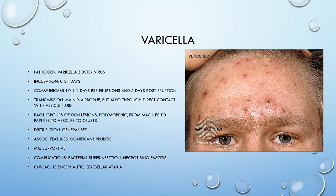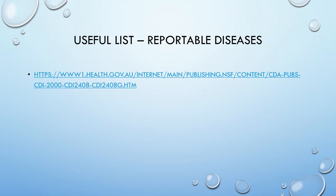Finally, varicella, caused by the varicella-zoster virus, with an incubation period of up to three weeks. It's communicable 1 to 2 days before the rash and 5 days after. Transmission is mainly airborne but can also be through direct contact with vesicular fluid. The rash is groups of polymorphic skin lesions ranging from macules to papules to vesicles to crusts, all over the body. It's associated with significant pruritus and management is supportive. It can be complicated by bacterial superinfection and necrotizing fasciitis. Severe complications include acute encephalitis and cerebellar ataxia. A key distinguishing feature of varicella is lesions at different stages throughout the cycle over the whole body, and of course it is extremely itchy.